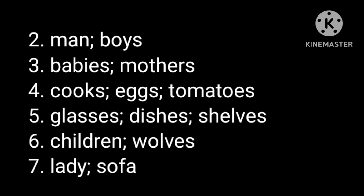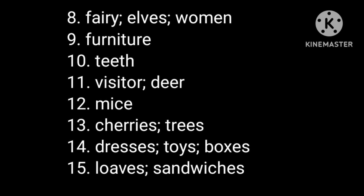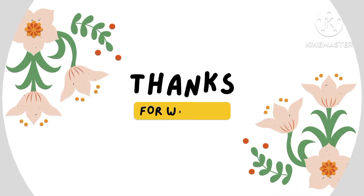Now the answers for Exercise B, changing all underlined words: 2. men, boys. 3. babies, mothers. 4. cooks, eggs, tomatoes. 5. glasses, dishes, shelves. 6. children, wolves. 7. lady, sofa. 8. fairy, elves, women. 9. furniture (no change — uncountable). 10. teeth. 11. visitor, deer. 12. mice. 13. cherries, trees. 14. dresses, toys, boxes. 15. loaves, sandwiches.